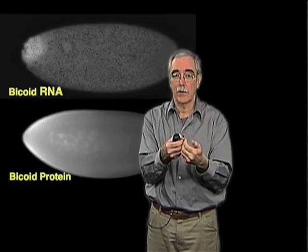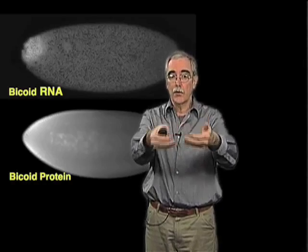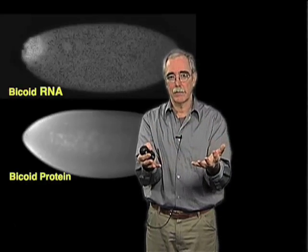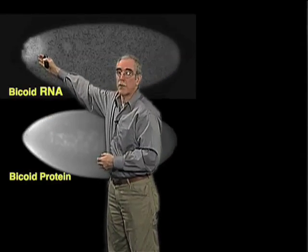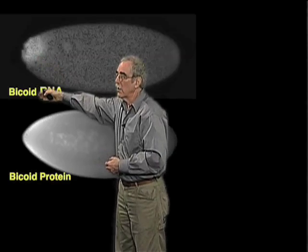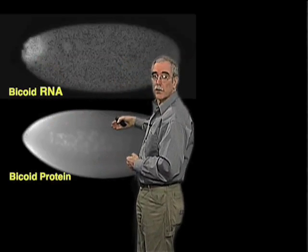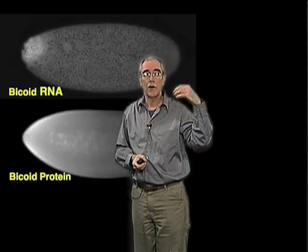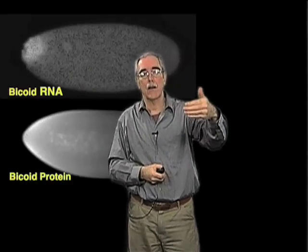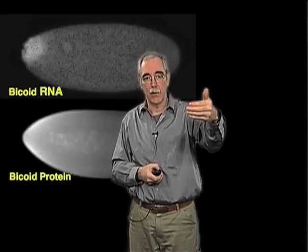Because the protein is not anchored, it diffuses from this source of synthesis. The RNA continues to make protein constantly from this localized position, but the protein diffuses, and what's established over time in these first two hours is a gradient of this transcription factor, Bicoid.